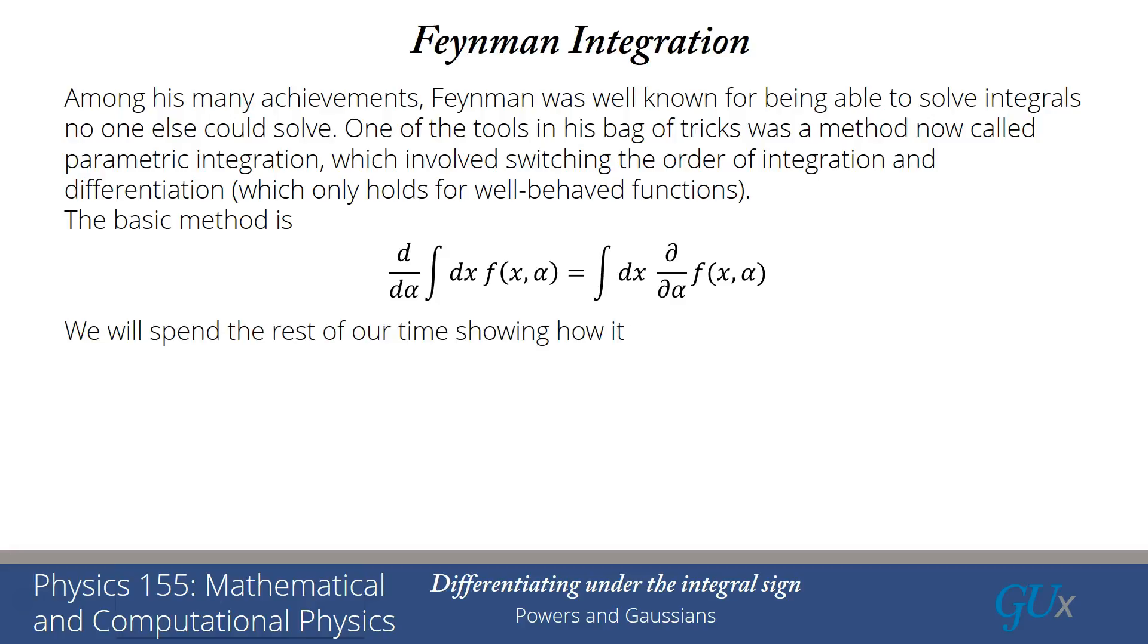But the key is you have to figure out how to introduce this parameter alpha, and that requires a lot of cleverness. The only way to really show you how to do this is by showing you some examples. I want to take a short moment to comment that this method called Feynman integration has nothing to do with the other method of Feynman that you might have heard called path integrals. Path integrals are used to solve quantum mechanics problems and are very different from what we're talking about here, which is just a very clever method for solving integrals.